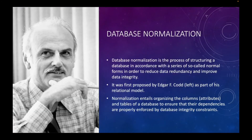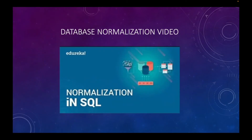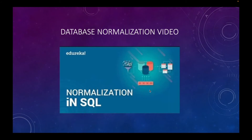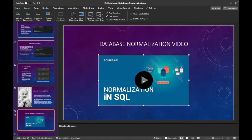Database normalization is the process of structuring a database in accordance with a series of so-called normal forms in order to reduce data redundancy and improve data integrity. It was first proposed by Edgar F. Codd as part of his relational model. Normalization involves organizing columns and tables of a database to ensure dependencies are properly enforced by database integrity constraints. Think of it like using a for loop instead of printing 'Hello World' a billion times — you want to be optimized, specific, and store as little as you need.